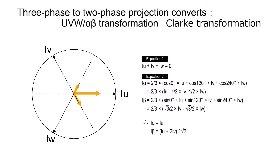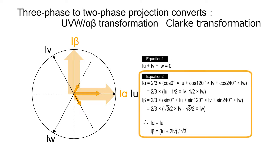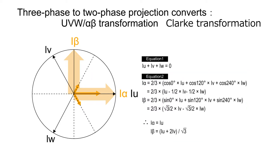Let the three-phase currents be IU, IV, and IW, and the two-phase currents after Clark transformation be I-alpha and I-beta. Then I-alpha and I-beta can be calculated using equation 2.